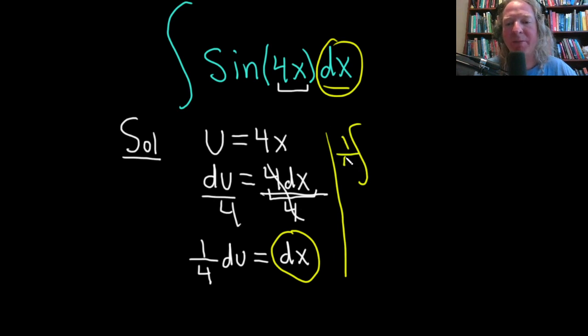So we can pull out the 1/4. I'll write the du in a minute. For now, let's look at this. This is sine of 4x. But 4x is u, so this is the sine of u, and then we have our du.